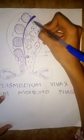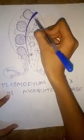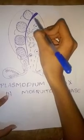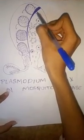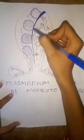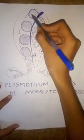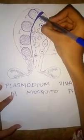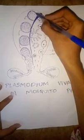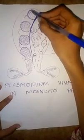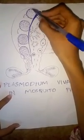In the vermicule stage, it is slender, motile, and long in form. The zygote goes out of the crop and forms at the wall of the crop. After going out, it becomes a spherical shape and the cyst wall is formed.